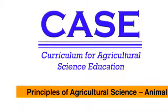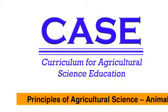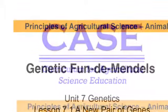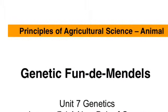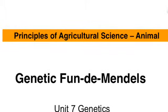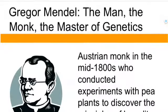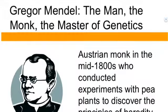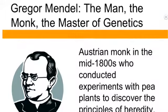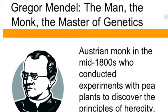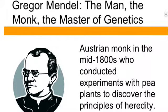Everything we talk about from here on should be a review of what you've already had in Science 9 and some in Science 10. The first person we're going to talk about is Gregor Mendel, and he was an Austrian monk who lived in the mid-1800s, and he worked with peas all the time to discover the principles of heredity.